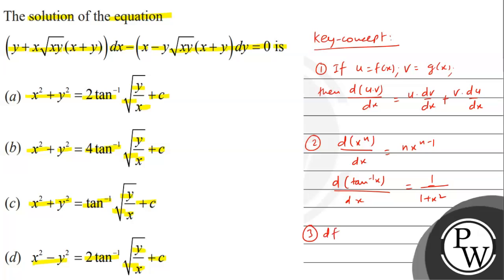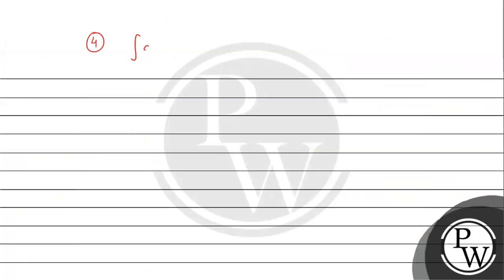Third key concept: differentiation of f(g(x)) with respect to x — its formula is to first differentiate the outer function f, then multiply by g'(x) (chain rule). Fourth: the integral of dx equals x + c.